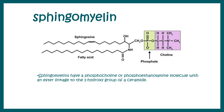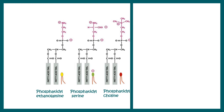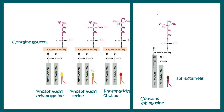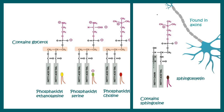To give a quick comparison: phosphatidylcholine, serine, or ethanolamine are characteristic phospholipids found in the plasma membrane. Phosphatidylcholine is not very different from sphingomyelin — the only difference is sphingomyelin has a sphingosine moiety. This sphingosine moiety makes sphingomyelin very different from phosphatidylcholine, and sphingomyelin is found in axons.